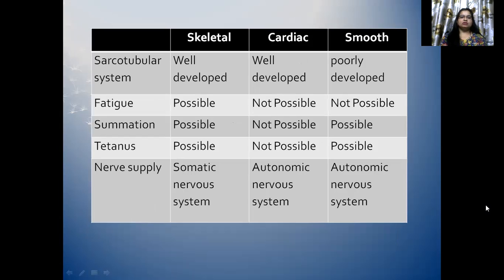Summation: possible in skeletal muscles and not possible in cardiac muscles. Also possible in skeletal muscles and smooth muscles and not possible in cardiac muscles. Skeletal muscles are innervated by the somatic nervous system, while cardiac and smooth muscles are innervated by the autonomic nervous system.